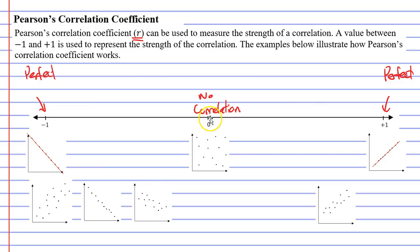So what we notice is that as we approach positive 1 or negative 1, we get a really strong correlation. But when we approach the number 0, we get a very weak correlation, or if we land on 0, we have no correlation at all.